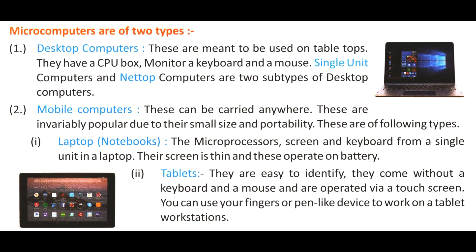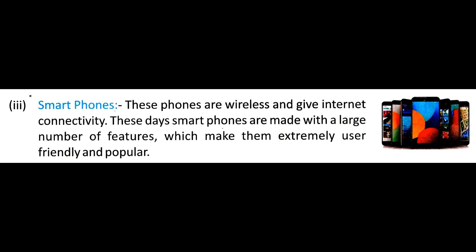In a laptop computer, the microprocessor, screen, and keyboard are attached in a single unit. The screen is thin and it operates on battery. In tablets, a keyboard and mouse are not required — they are operated via a touch screen by touching with a finger or a pen-like device. Smartphones are wireless phones that give internet access to the user. They have many features such as making calls, sending messages, accessing the internet, watching online videos, and a variety of special features that make smartphones popular.